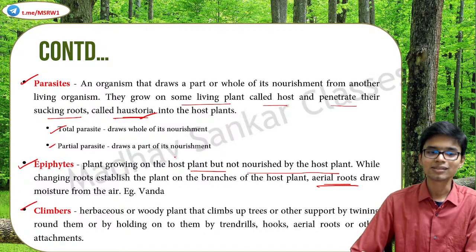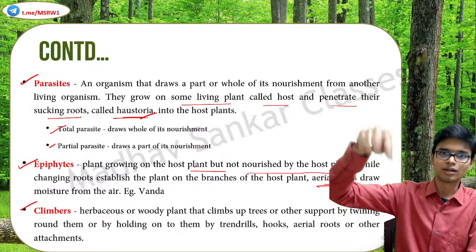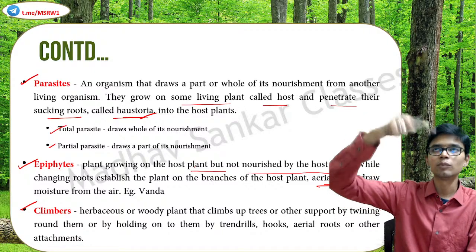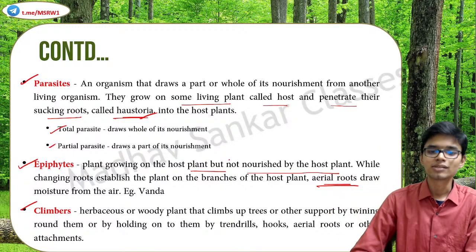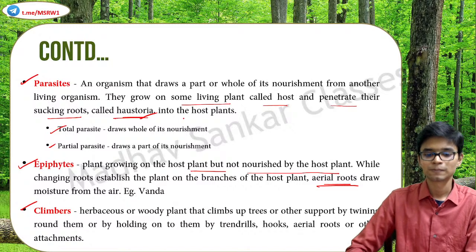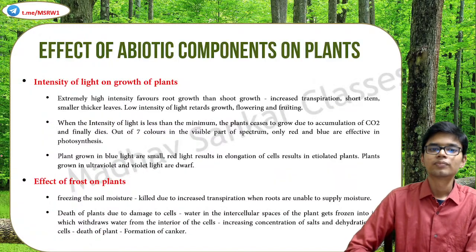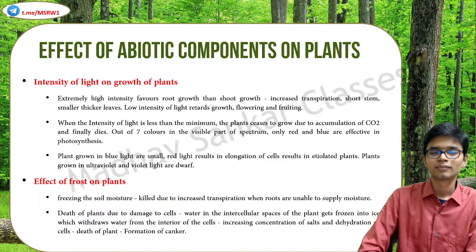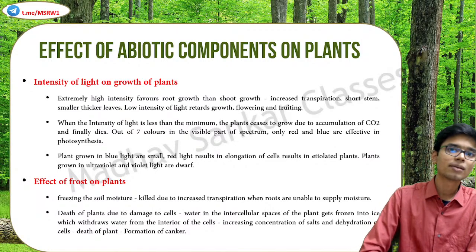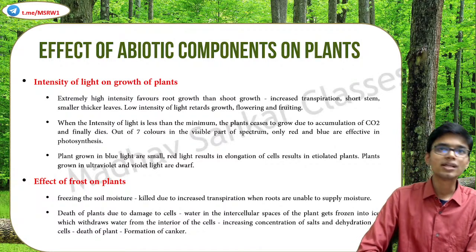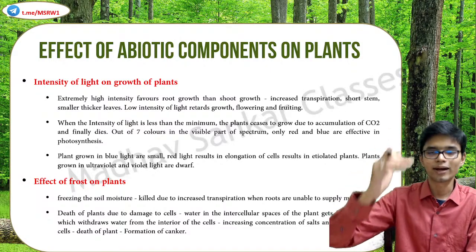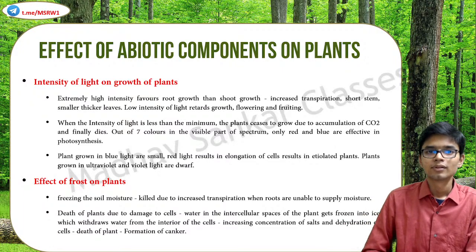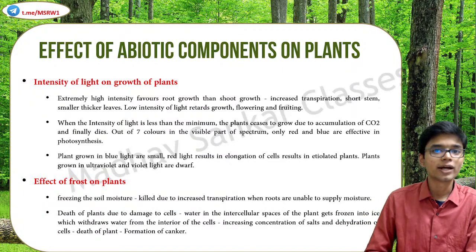Climbers are plants that also cling on to trees and move all the way up for sunlight. Some climbers have aerial roots and some have other attachments. Now, the effects of abiotic components on plants - our ecosystem is made of both biotic and abiotic components. Abiotic components basically determine what kind of biota grows in an area. The first abiotic factor is the intensity of light.